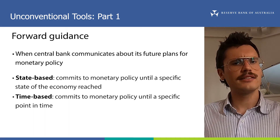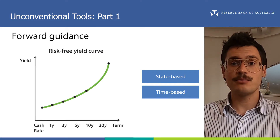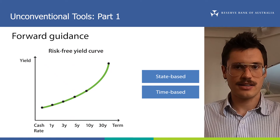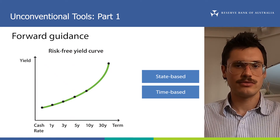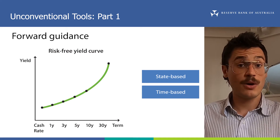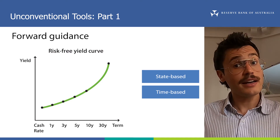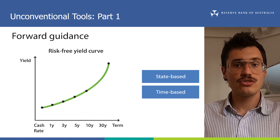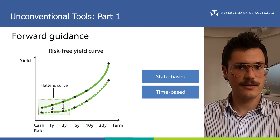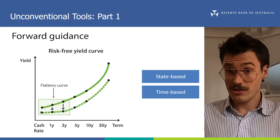So how does forward guidance influence interest rates? Let's take a look at the risk-free yield curve. It slopes up here, reflecting the possibility that interest rates will rise in the future. By providing guidance about its plans for the cash rate target, and possibly other monetary policy tools, the RBA can influence expectations about the future level of interest rates and reduce uncertainty about whether they might rise. This is expected to change the shape of the yield curve. If the guidance reflects that the RBA will not raise interest rates, this should flatten the yield curve between the cash rate and the term of the guidance, and lower the yield curve further out. On our example yield curve, the guidance given would suggest that the cash rate is not expected to increase for at least three years.